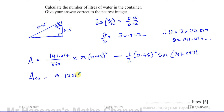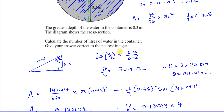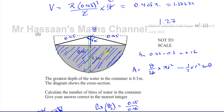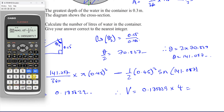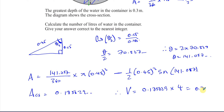So the volume of water is the cross-sectional area 0.185629 times the length of 4 meters, which gives 0.74251 meters cubed.